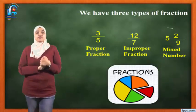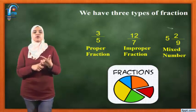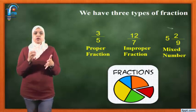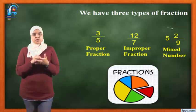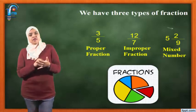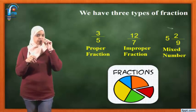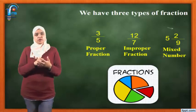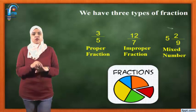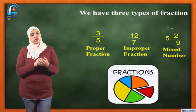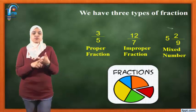Here we have 3 types of fractions. The first one is called proper fraction. The second one is improper fraction. And the third one is mixed number. A proper fraction means the numerator is smaller than the denominator. The improper is vice versa — the numerator is greater than the denominator. And mixed number — we have 3 numbers: a whole number and a fraction. For example, 5 and 2 over 9. So the 3 types are proper, improper, and mixed number.